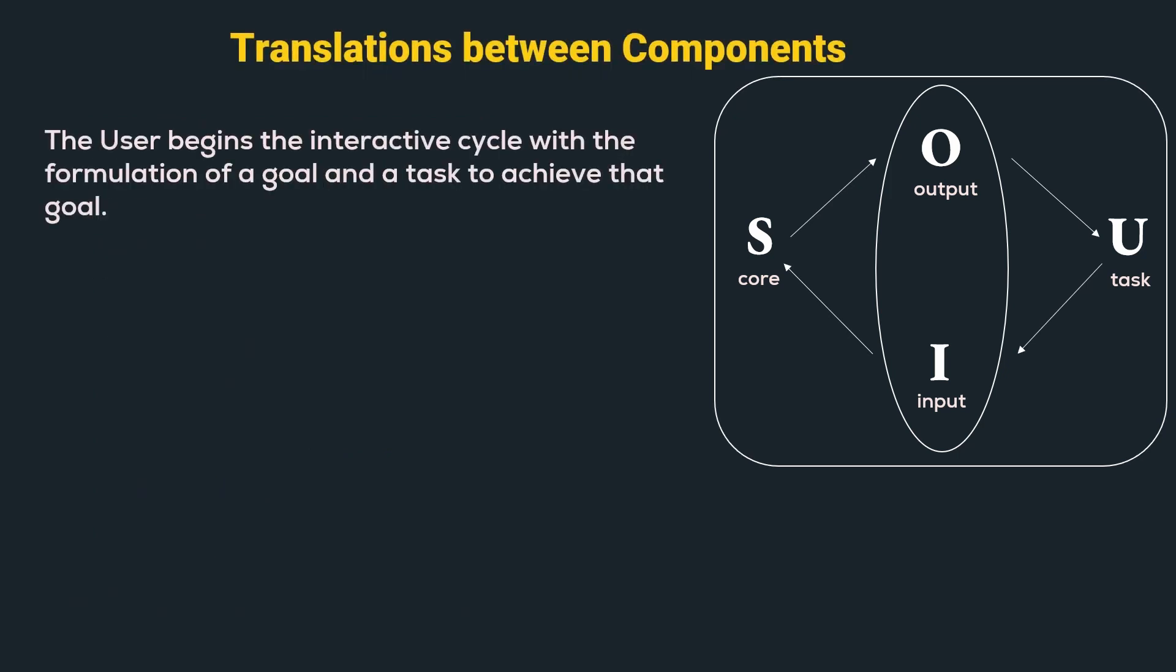The user begins the interactive cycle with the formulation of a goal and a task to achieve that goal. The user can only manipulate the machine through the input. Hence, the task must be articulated within the input language.